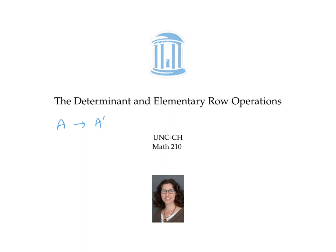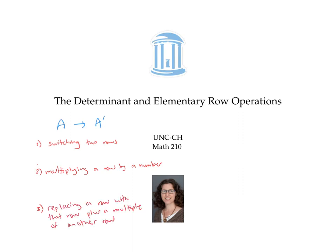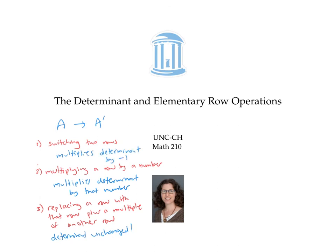In this video, we looked at three elementary row operations: switching two rows, multiplying a row by a number, and replacing a row with that row plus a multiple of another row. We found that the third elementary row operation doesn't change the determinant at all; the second one multiplies the determinant by that number; and the first — switching two rows — multiplies the determinant by negative one. We also saw that the determinant of a matrix with two identical rows is zero.